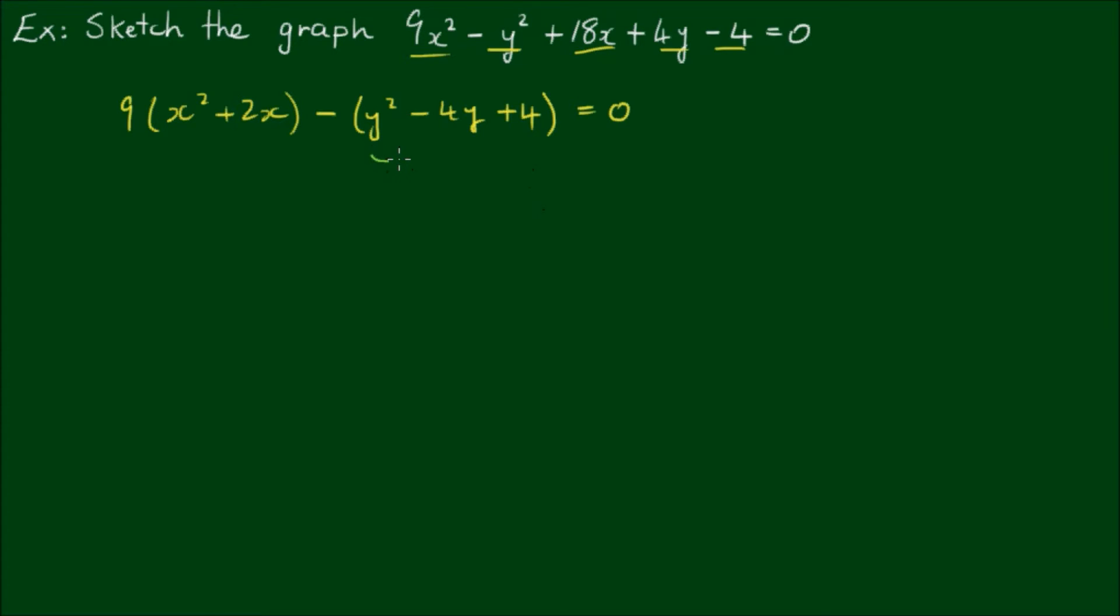Now this trailing term here, I can write this as a perfect square. So I'm completing the square. I can write this as (y - 2)². So you can satisfy yourself that this expands to y² - 4y + 4. This minus gets copied down.